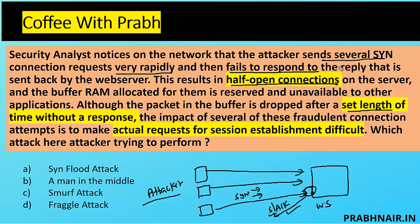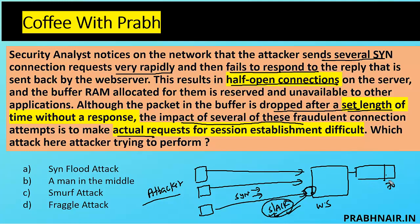The attacker is sending several SYN connection requests rapidly and failing to respond to the SYN-ACK reply sent back by the web server. The web server keeps each SYN packet it receives in memory for a maximum of around 70 seconds. The impact of several fraudulent connection attempts is to make actual requests for session establishment difficult. The buffer is dropped after the set length of time without a response, so if no reply comes in 70 seconds, the packet is dropped. But the attacker fills this buffer by continuously sending multiple packets.